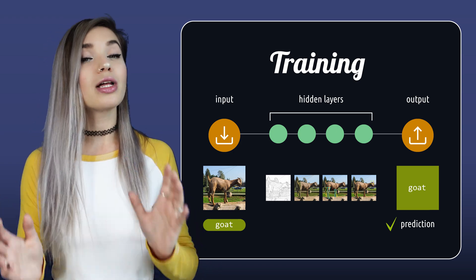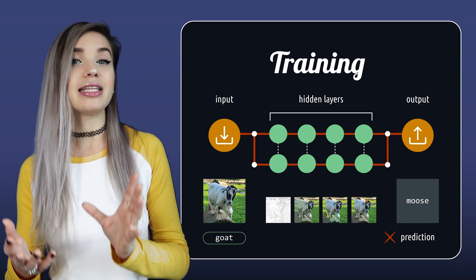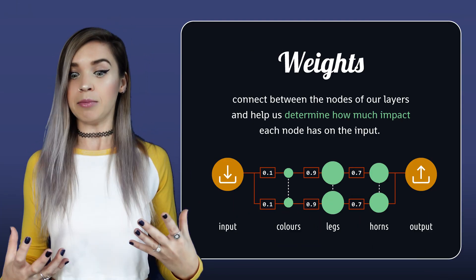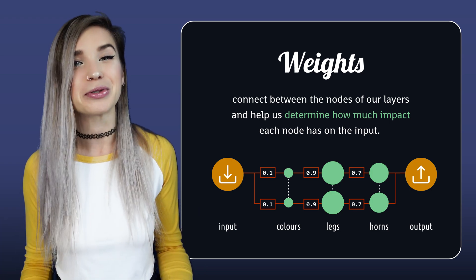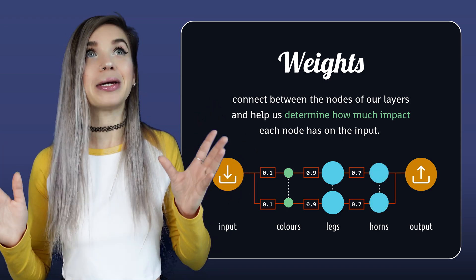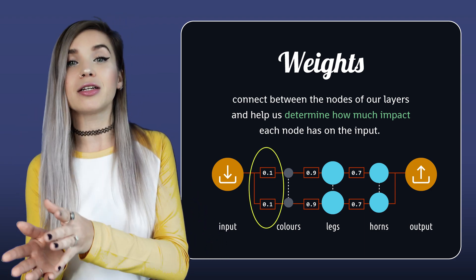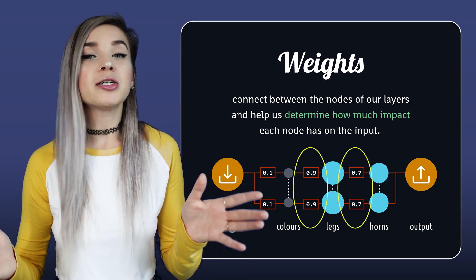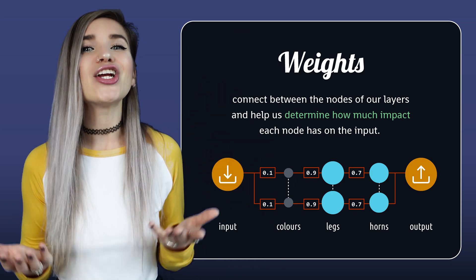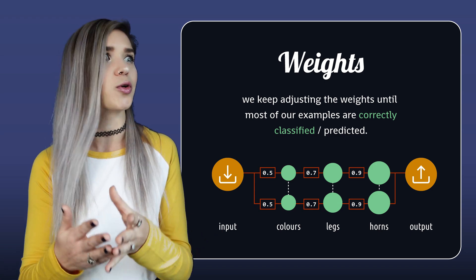This class name, however, will not always match the label. The main reason are those links that connect between the nodes of our layers — we call these links weights, and they help us determine how much impact each node has on the input. For example, maybe counting legs or detecting horns is much more meaningful than mapping colors. In that case, the weights that lead to the color layer will have lower values than the other two. So just because our first prediction is incorrect, it doesn't mean that our neural network is bad.